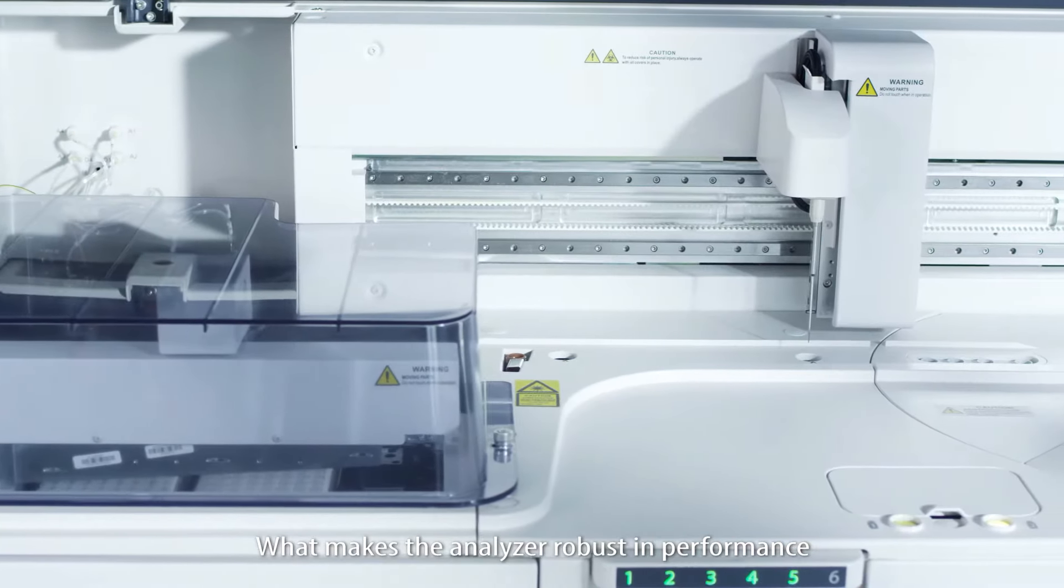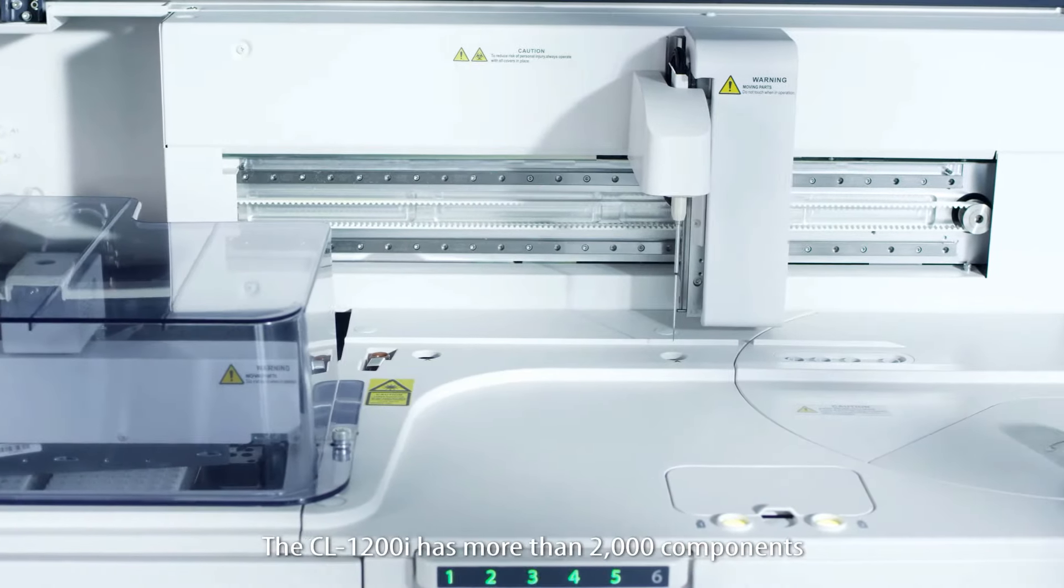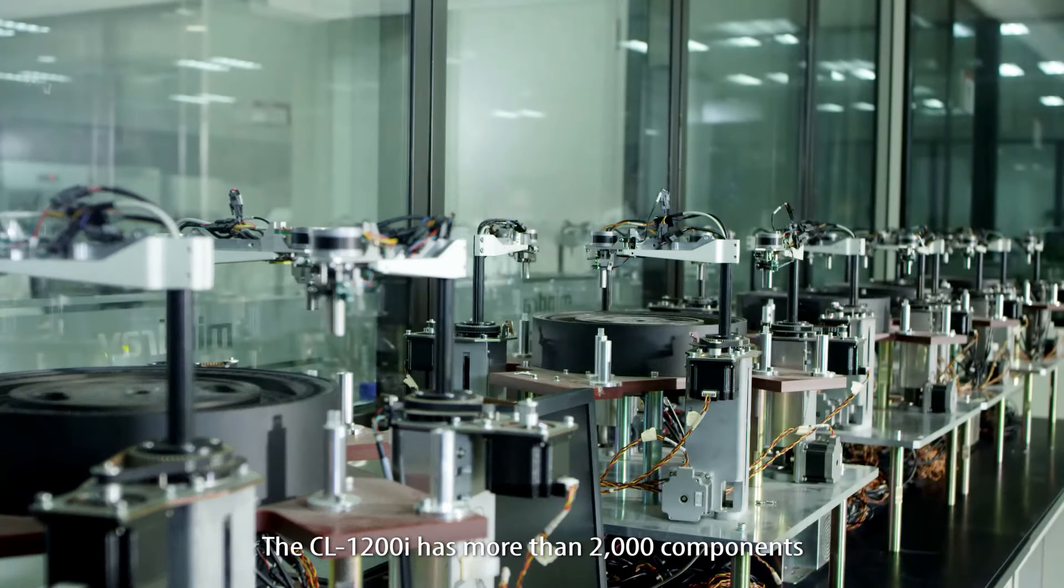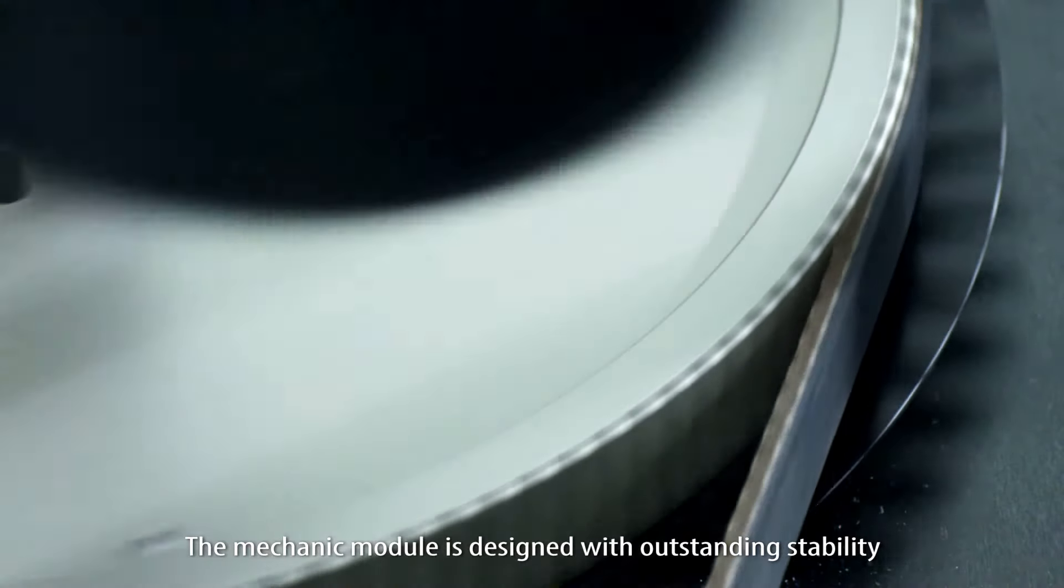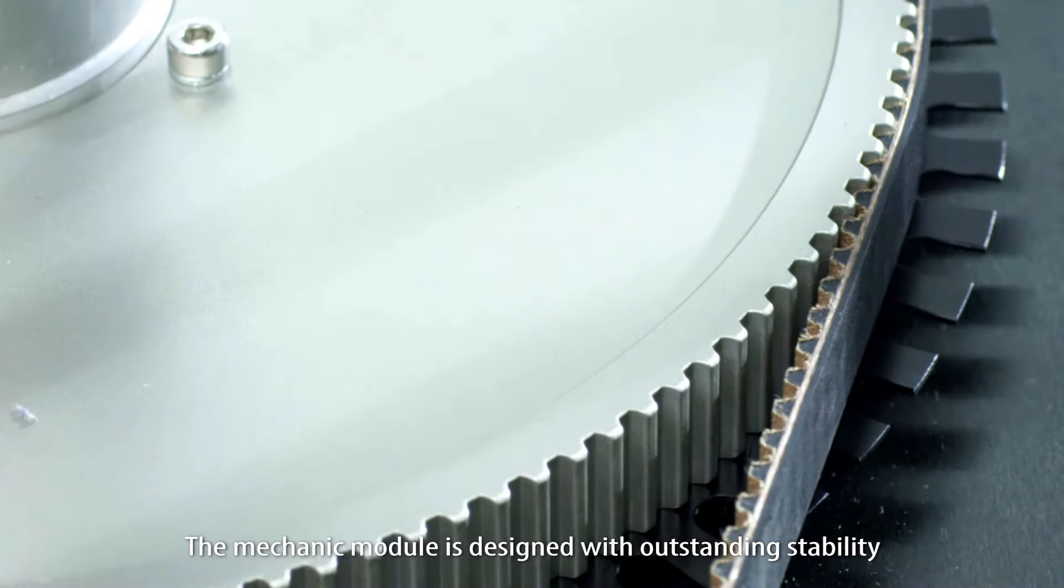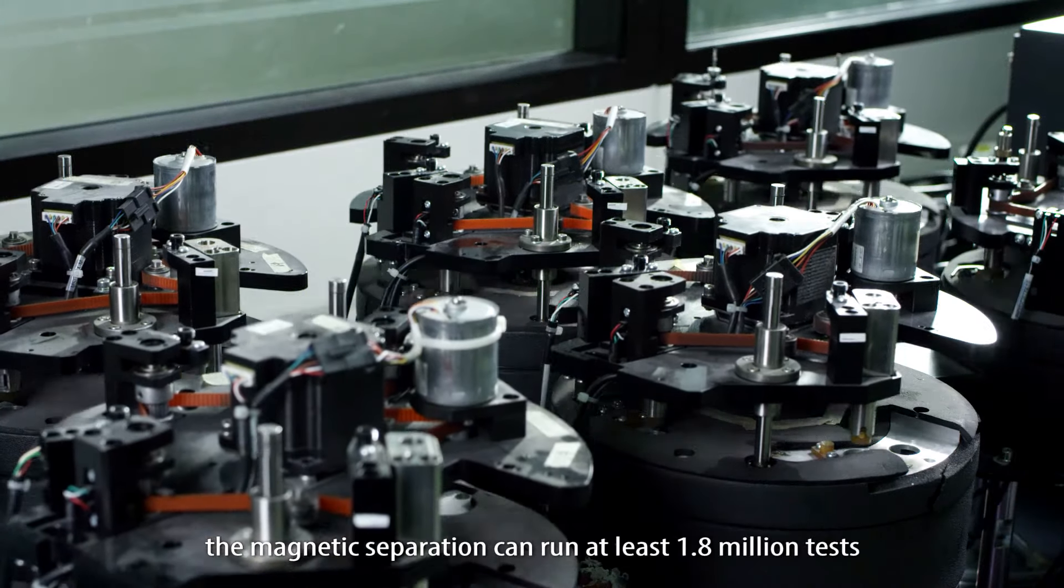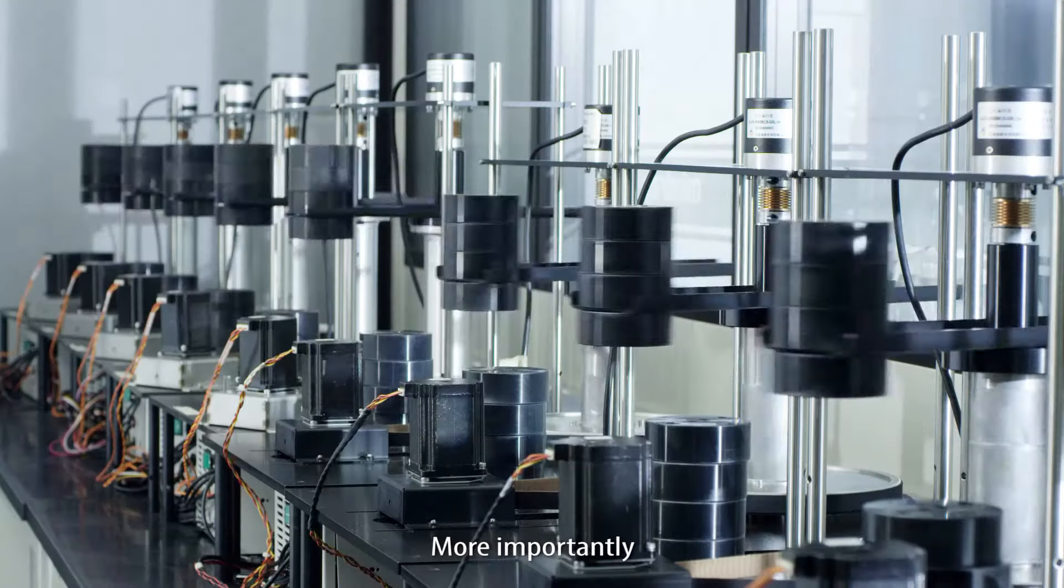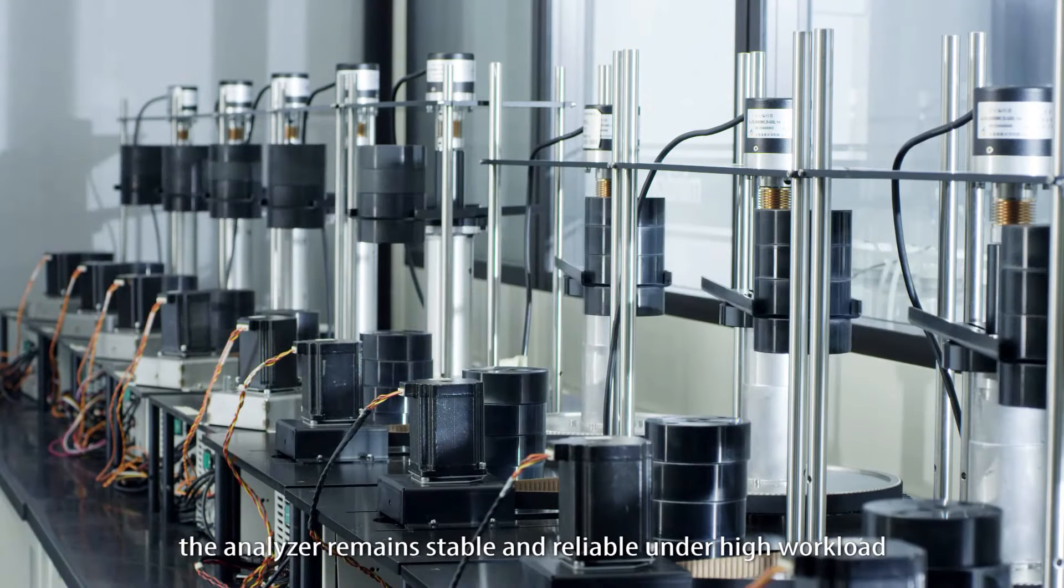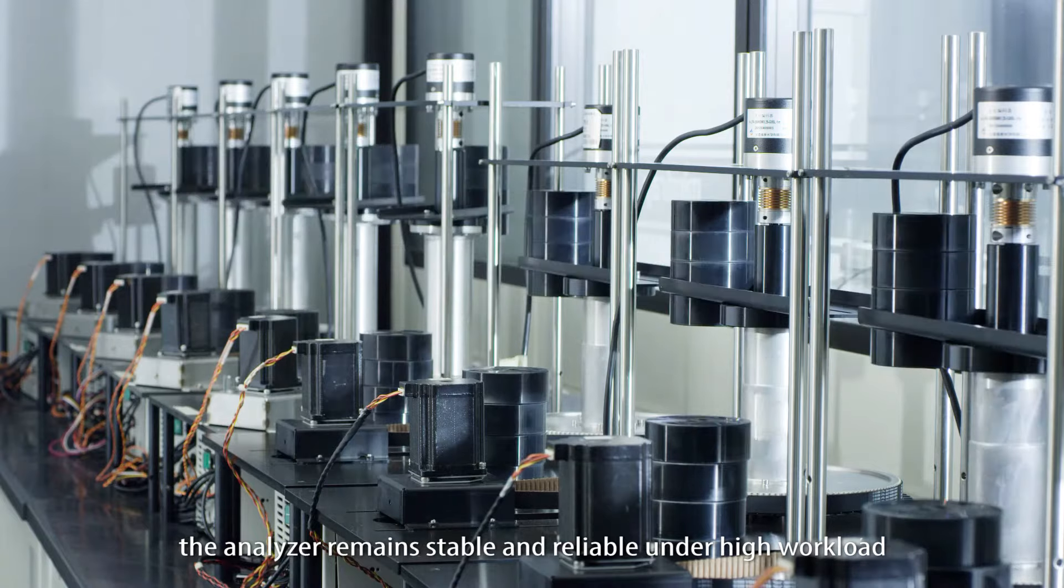What makes the analyzer robust in performance? The CL-1200i has more than 2000 components. The mechanical module is designed with outstanding stability. For example, the magnetic separation can run at least 1.8 million tests. More importantly, the analyzer remains stable and reliable under high workload.